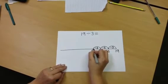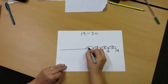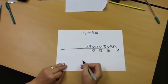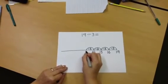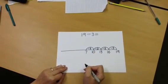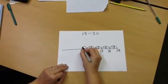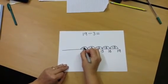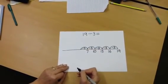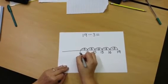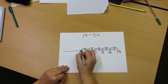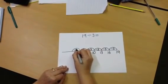10 subtract 3 is 7. 7 subtract 3 is 4. And 4 subtract 3 is 1.